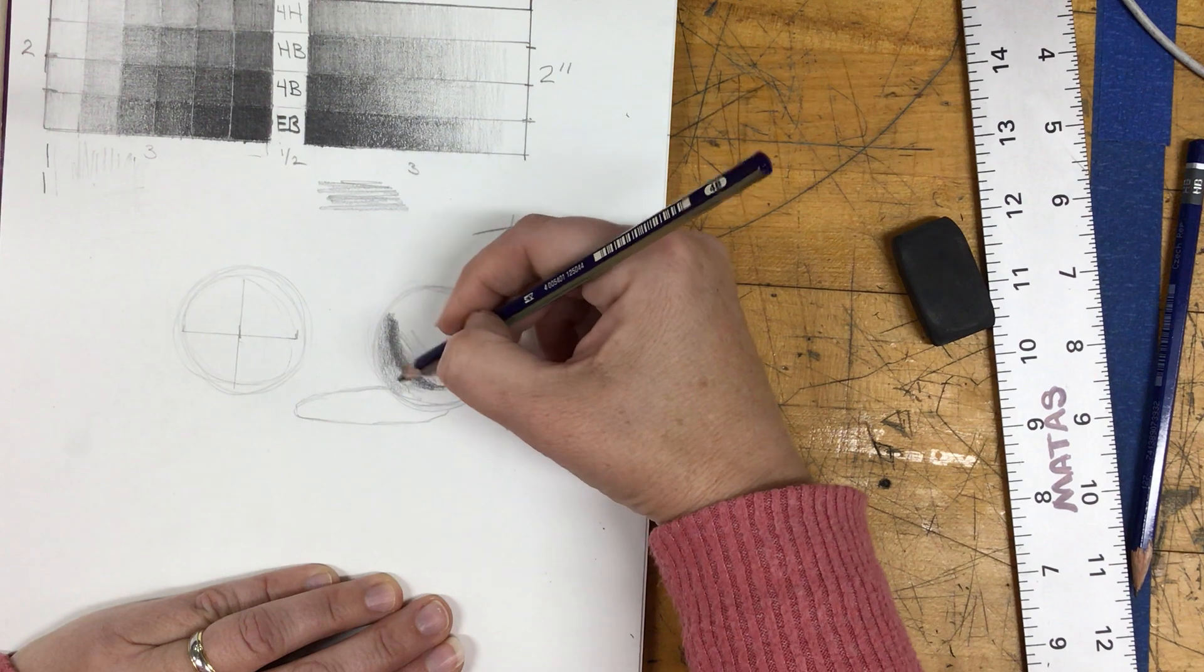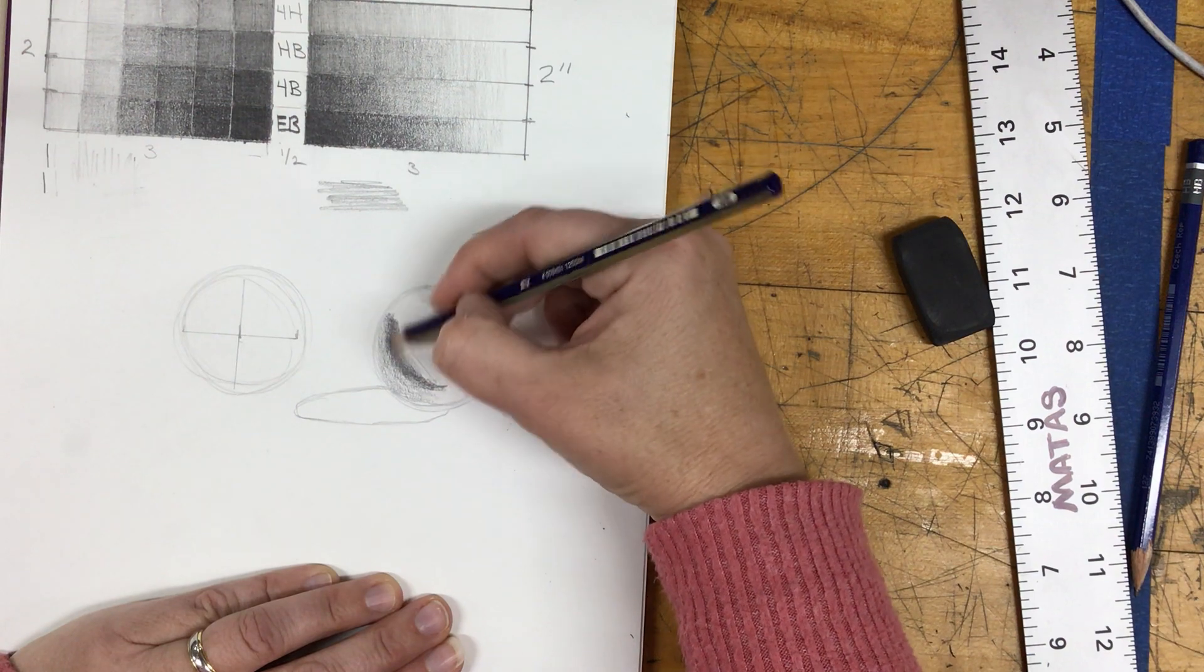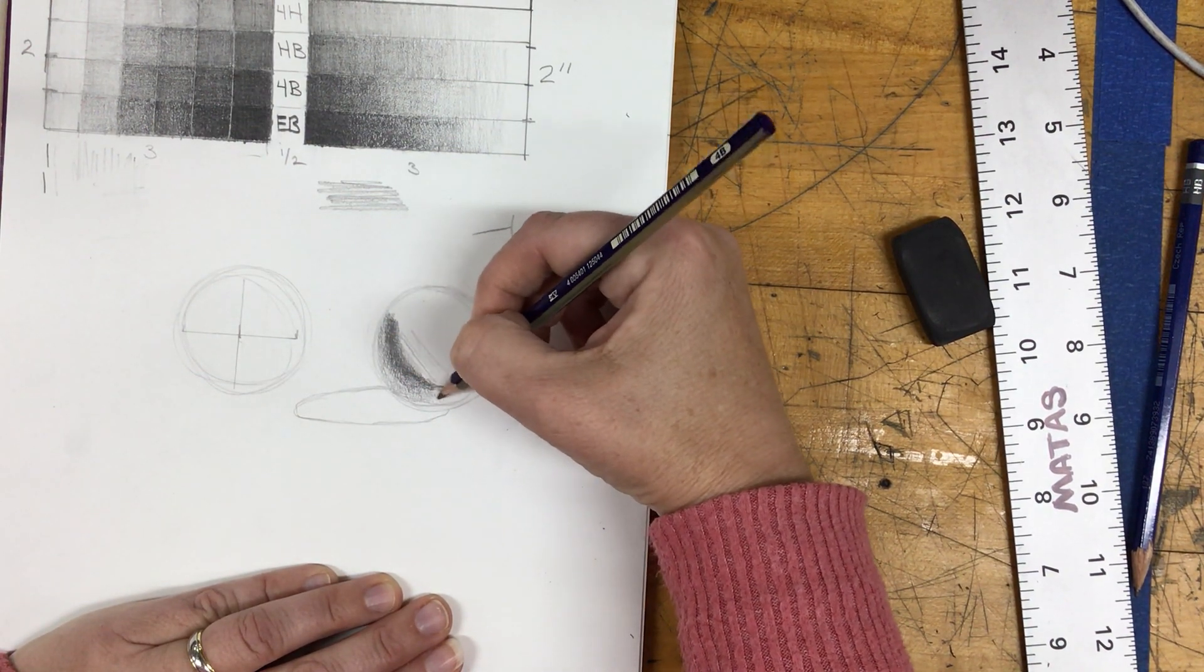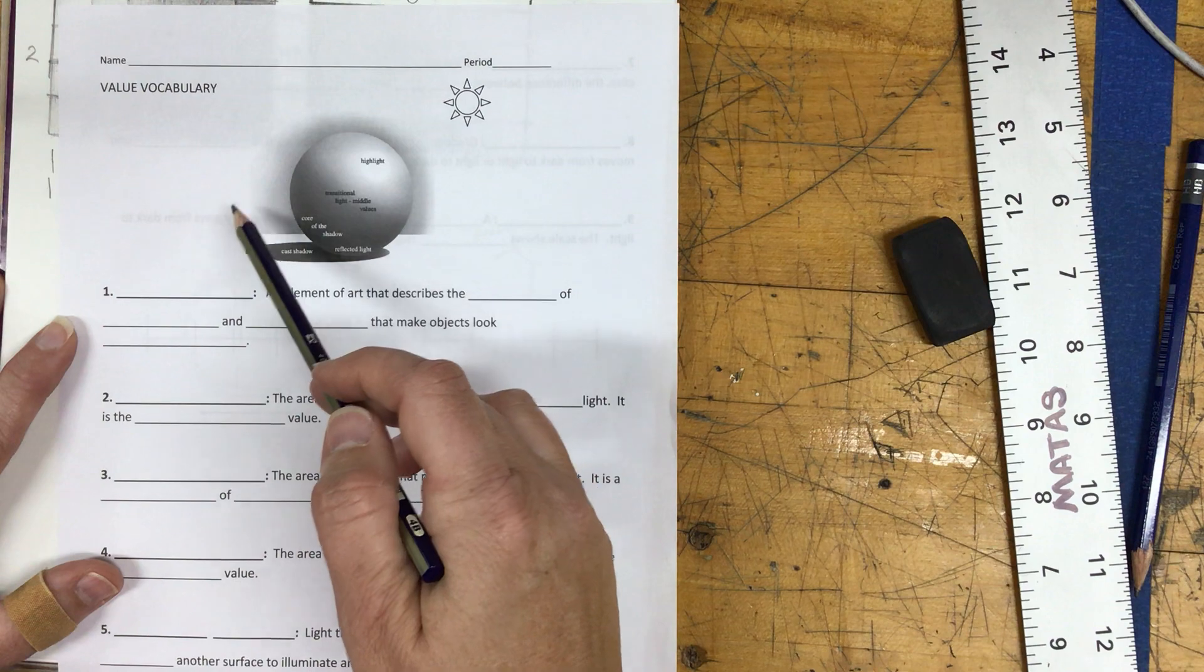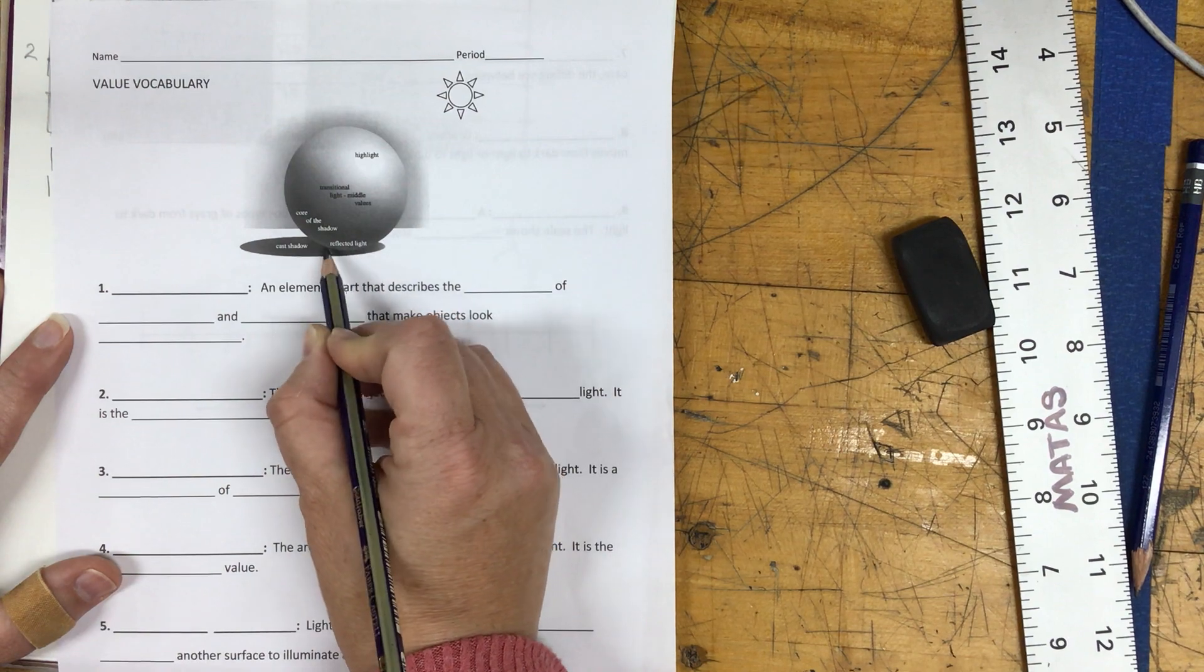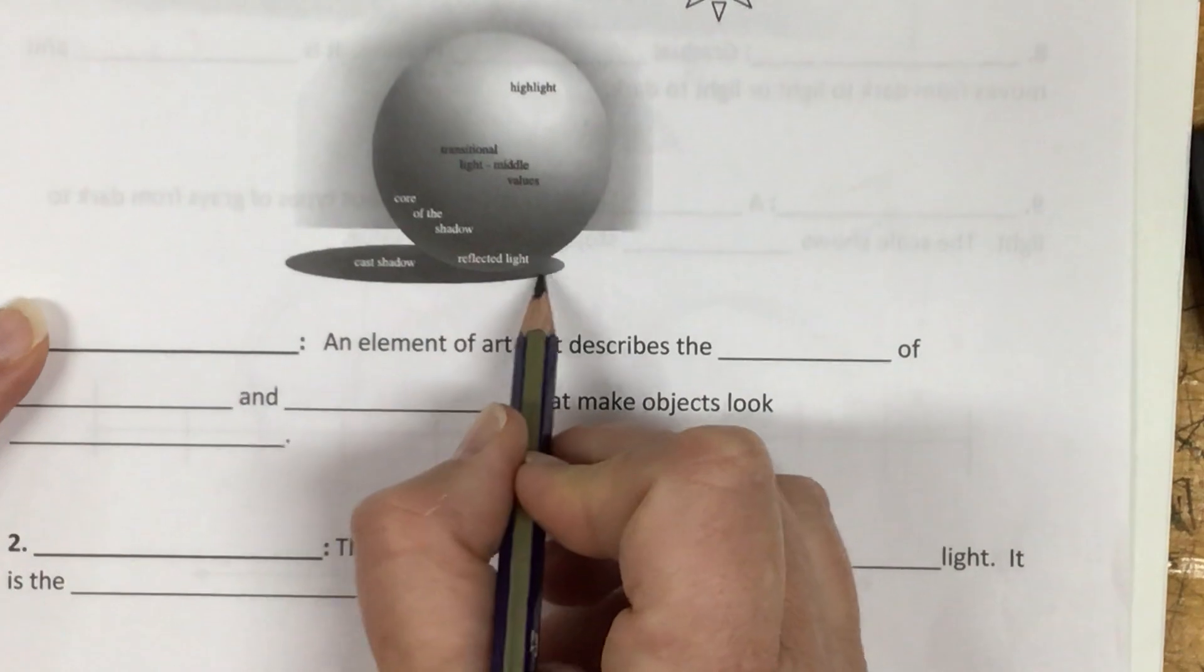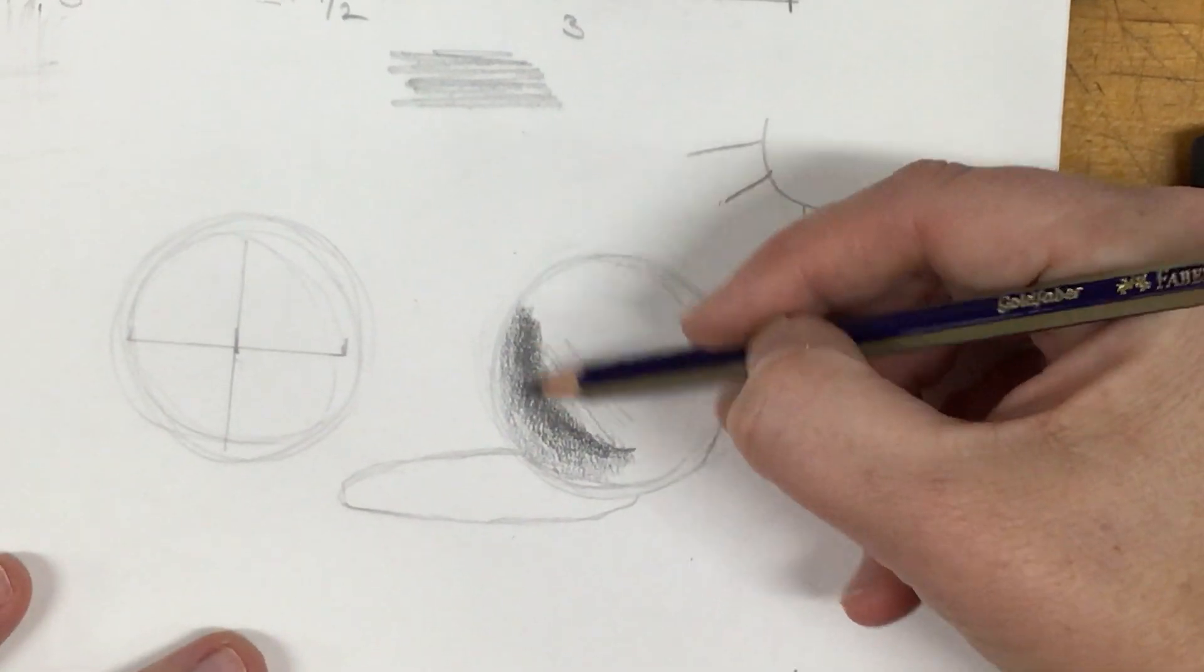So I'm using short, close, overlapping marks. And I'm going to have a gradual transition from that darkest value. That's kind of like a crescent shape into what we call reflected light. So as light travels, it travels in a straight line. It's going to hit the table and it's going to bounce back up. And so the under section of this, you can see it's just a little bit lighter. See how you see the edge on this handout where this cast shadow is darker.